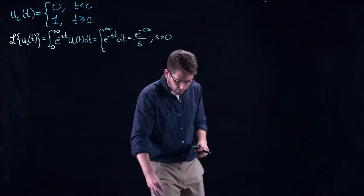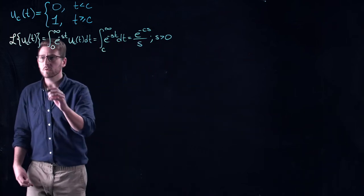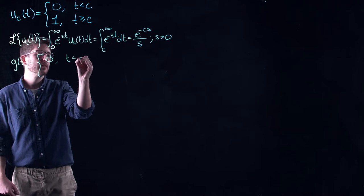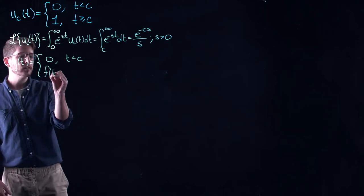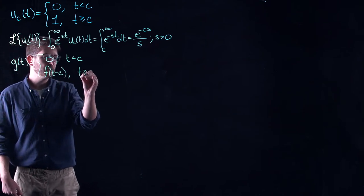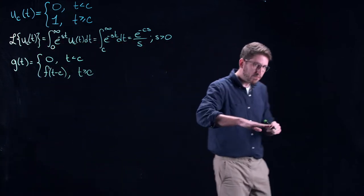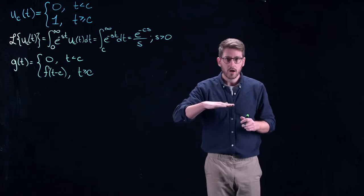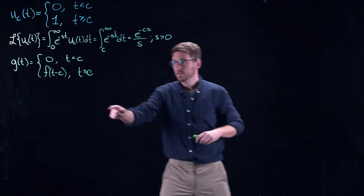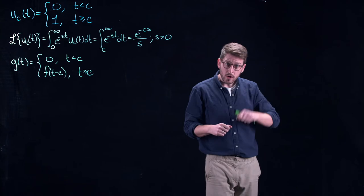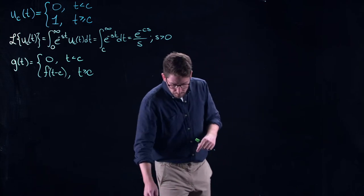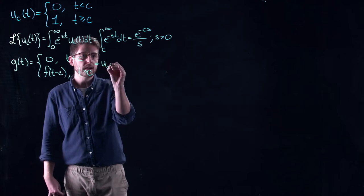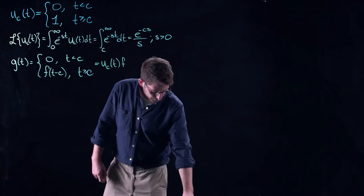A lot of the times in engineering you will see functions that look like: G(t) = 0 for a while, and then eventually it gets turned on to some completely ambiguous function. It's not just a simple off-then-on with a constant signal — that signal could be applied in a variety of ways. It could be off and then you start applying a periodic forcing like a sine curve, or an exponential driving forcing. The key insight is that we can write this as u_c(t) times f(t minus c).